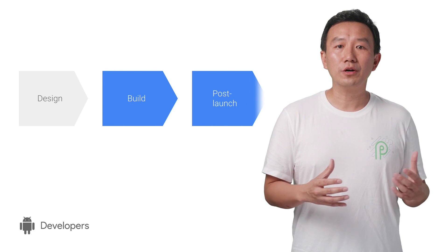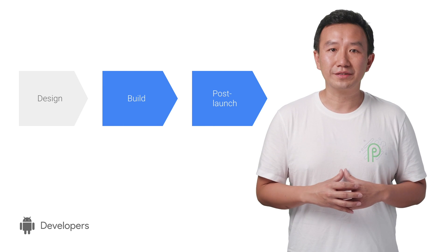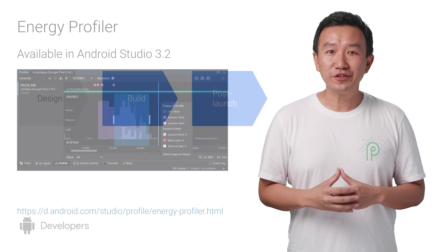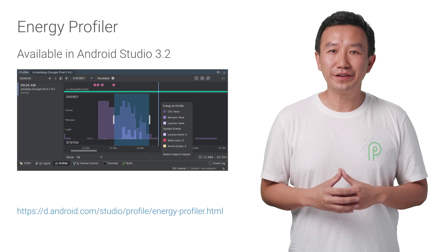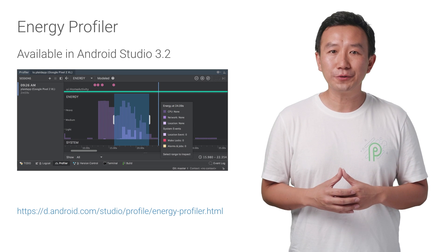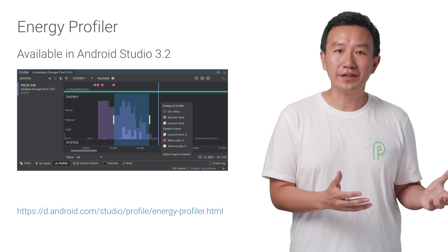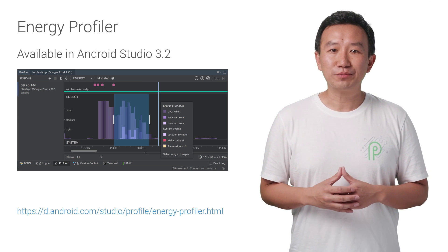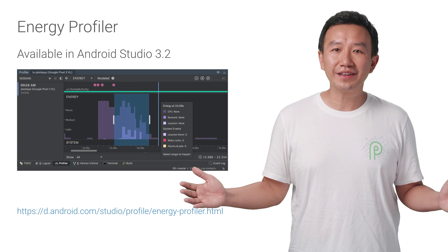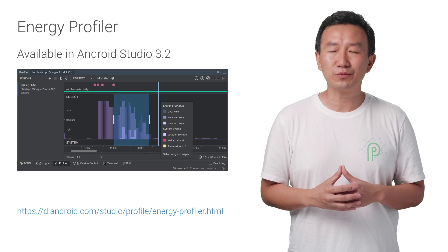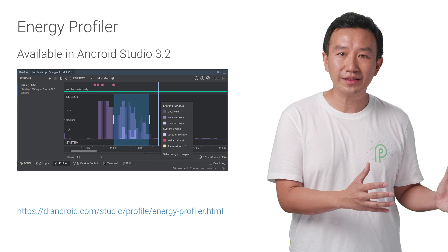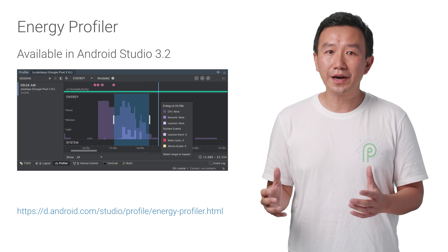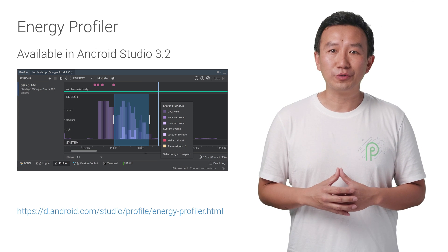We've talked about some design and testing best practices. During development and post-launch, there are a couple of related tools. The Energy Profiler is a new feature available in Android Studio 3.2, currently on the Canary channel. After you deploy your app to a connected device, the Profiler shows a live timeline of how your app uses system resources, such as partial wake locks, wake-up alarms, jobs, and location requests.